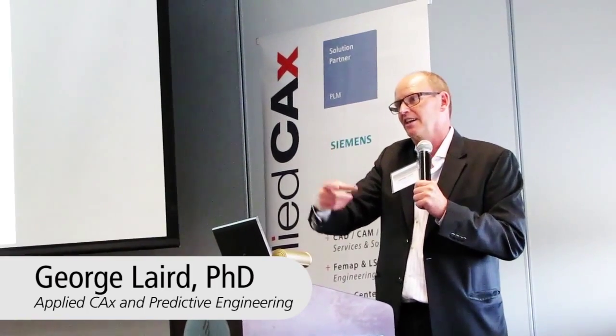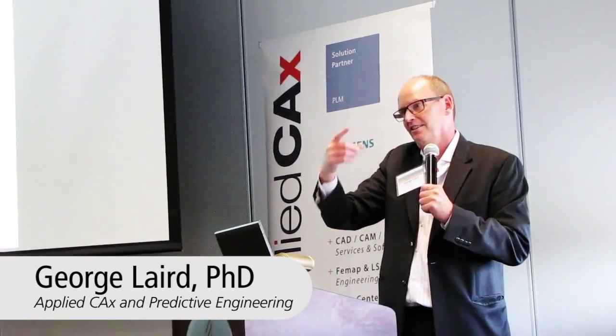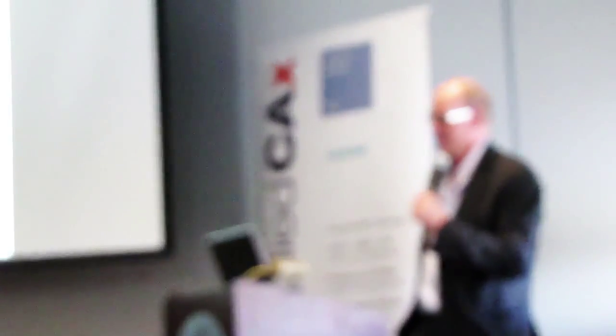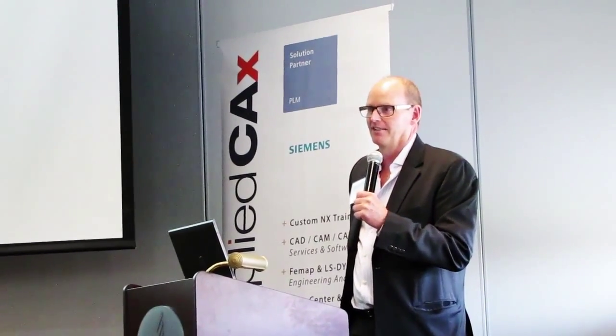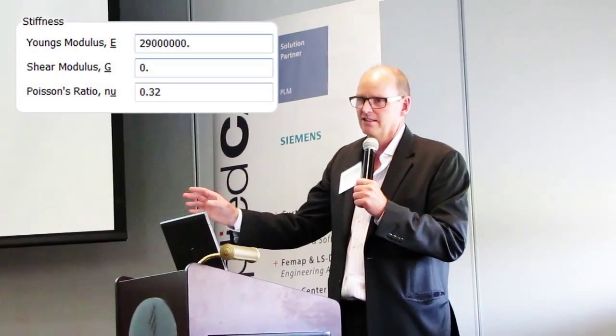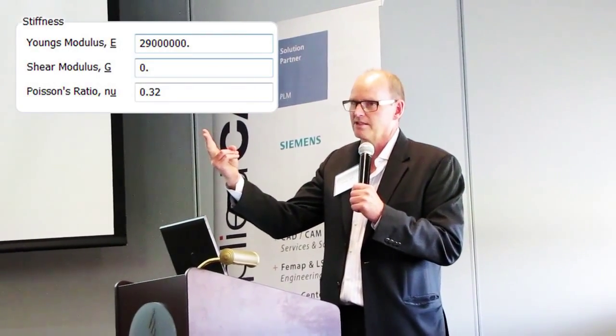Model construction, validation — it takes time. So what we do is we're a little compulsive. You come up with material cards, the default gives you all this extraneous information — rip all that out. If you're doing a linear static analysis, you need two pieces of data: elastic modulus and Poisson's ratio. Everything else, get rid of.